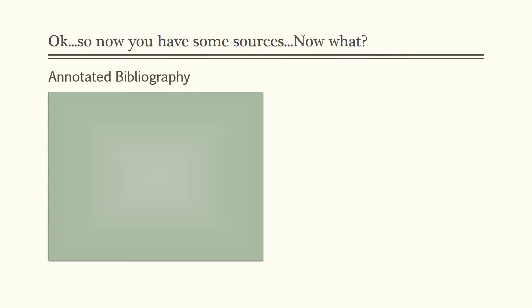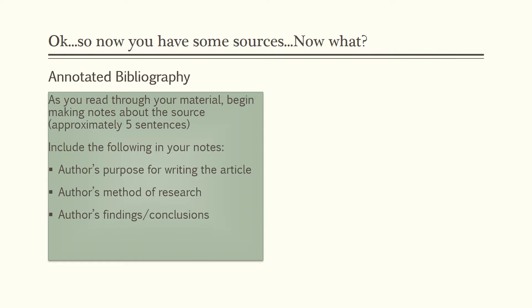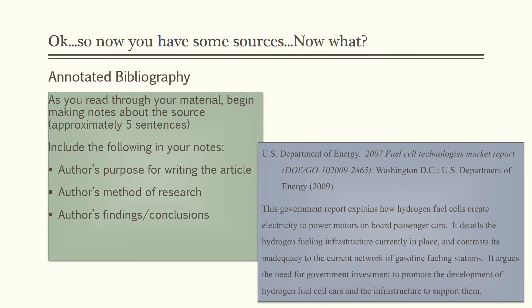Now you have some sources — let's flash forward through the stages of your academic research. Now what do you do? Let's talk about the annotated bibliography. Lots of people cringe at the thought of it, but honestly it can be a really good friend if you let it. In a nutshell, the annotated bibliography is a neat way to get the meat and potatoes of your literature review done. The annotations are simply a few sentences about the source you read that describe what the author's purpose was for writing the article, the methods the author used to find the information, and what the author found or concluded about the specific topic.